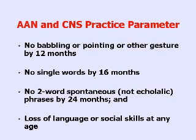Or if you want to be really simplistic, like we pediatric dumb neurologists, you can use the criteria of the American Academy of Neurology and the Child Neurology Society practice parameter: no babbling or pointing or other gesture by 12 months, no single words by 16 months, no two-word phrases by 24 months, or any loss of any language or social skills at any age. Again, low threshold for being worried.